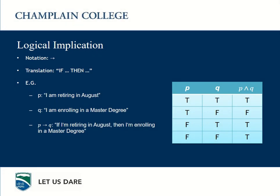The logical implication — the notation is an arrow pointing from left to right — is translated as 'if something, then something.' For instance, if P is 'I'm retiring in August' and Q is 'I'm enrolling in a Master's degree,' then P implies Q means: 'If I'm retiring in August, then I'm enrolling in a Master's degree.' The only situation where an implication is FALSE is when the proposition on the left is TRUE and the proposition on the right is FALSE — that's the second line of the truth table. If both are TRUE, I clearly do not lie.